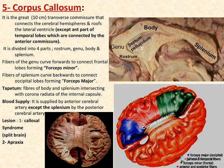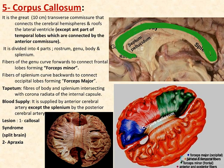The corpus callosum is the largest commissural fiber of the brain, situated on the medial surface. It is approximately 10 cm in length and has four anatomical parts. It connects all lobes of the brain — the frontal, parietal, temporal, and occipital lobes — except for the most anterior part of the temporal lobes, which are connected by the anterior commissure.